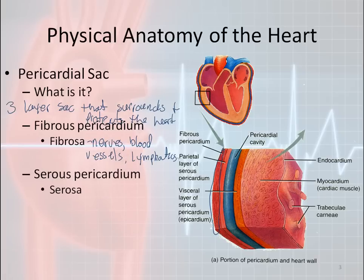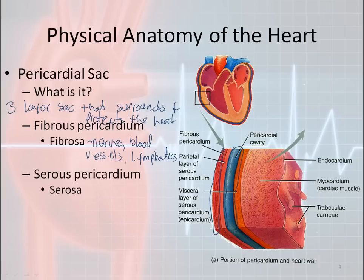The other layer is called the serous pericardium, also known as the serosa. The serosa is a lubricative layer of the pericardial sac that allows the heart to beat without causing a lot of friction against the fibrosa. If there were a lot of friction, it would eventually wear away at the epicardium of the heart and cause all kinds of problems. This lubrication keeps that from happening.